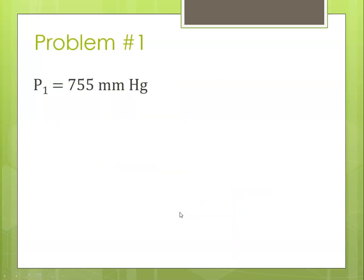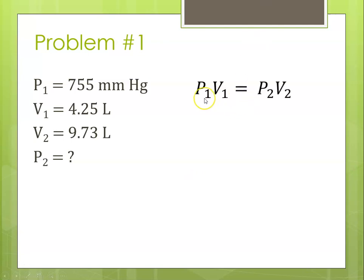Identifying variables: P1, V1, V2, and P2 is our question mark. Our equation is for Boyle's Law, P1 V1 equals P2 V2, recalling that temperature is constant. So solving for P2, which means dividing both sides by V2, we see that P2 final pressure is going to be P1 V1 over V2.